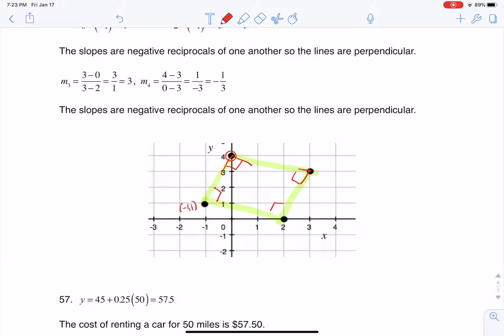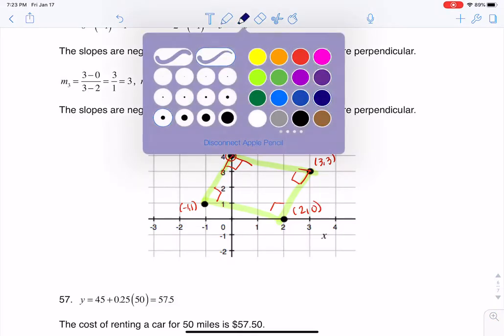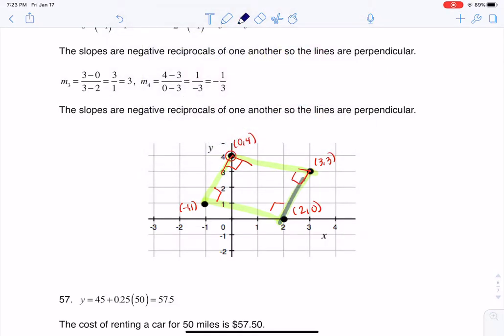So if this is the point (-1,1) and this is (0,4), and this one over here is (3,3), and then finally this one over here is (2,0), what I want to do is find the slope between these two points and these two points, and those should be perpendicular.